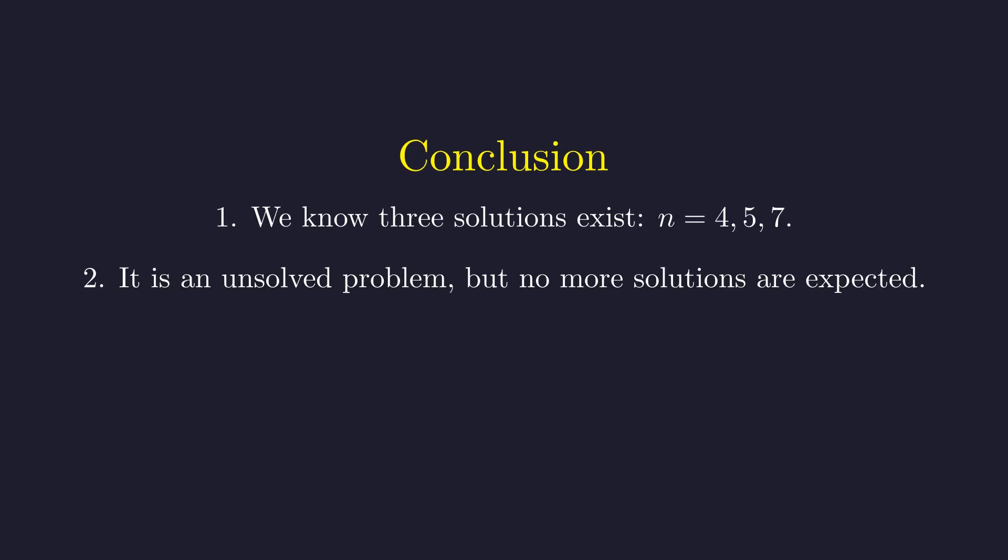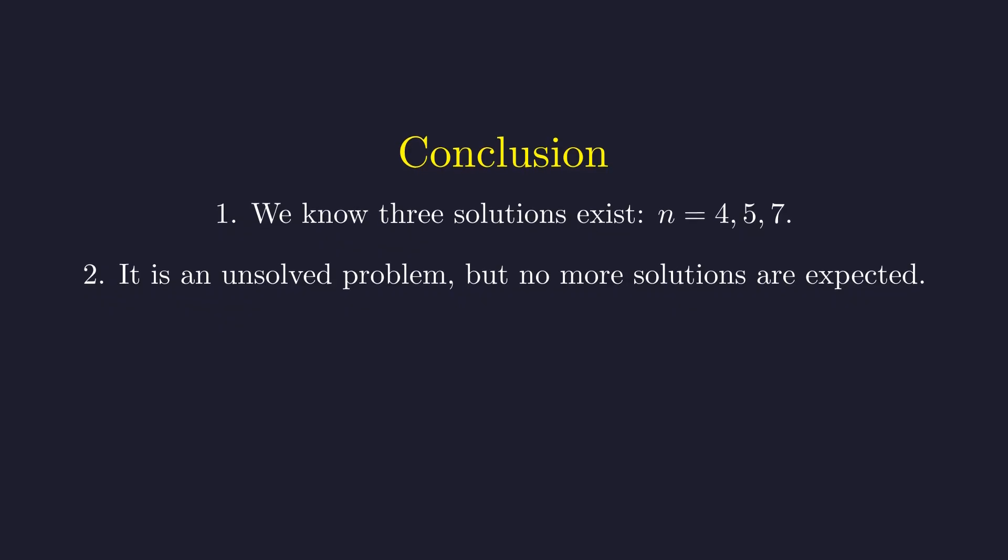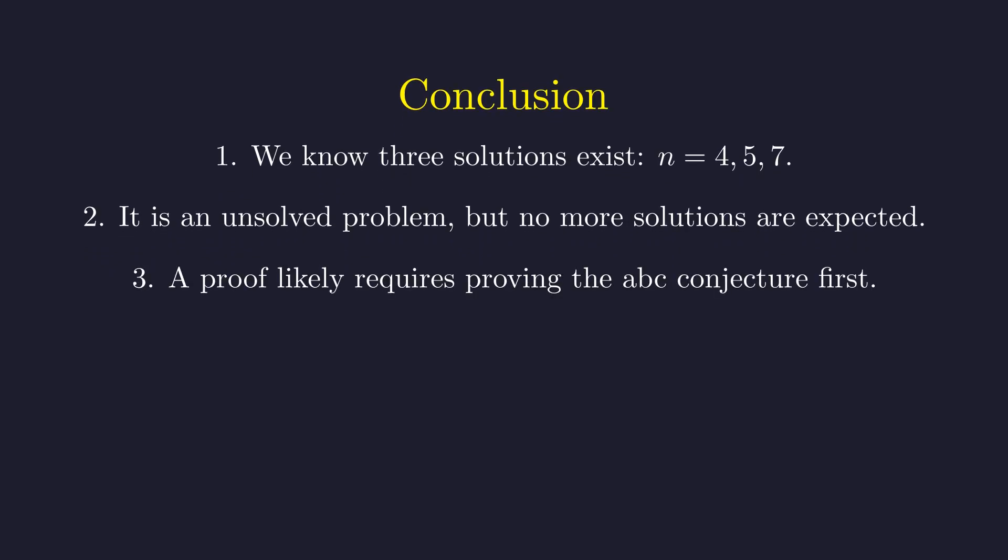So, what can we say in the end? We have found three solutions by hand, the so-called brown numbers. We know that it remains an unsolved problem, but after extensive searching, it's widely believed there are no others. And most remarkably, a final proof is tied to one of the deepest and most difficult conjectures in all of mathematics.